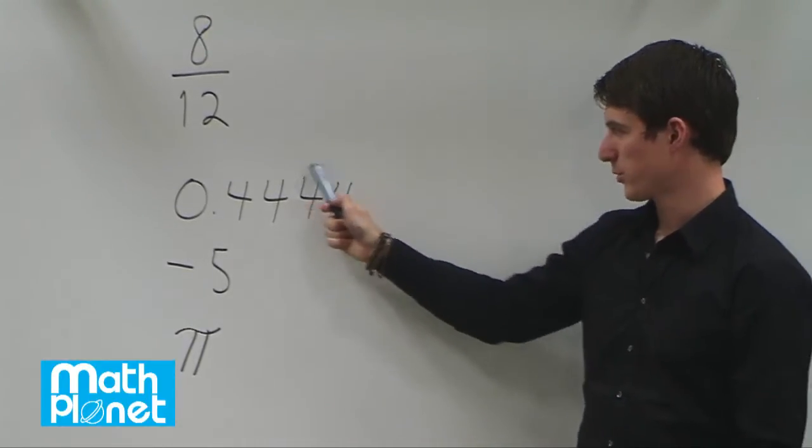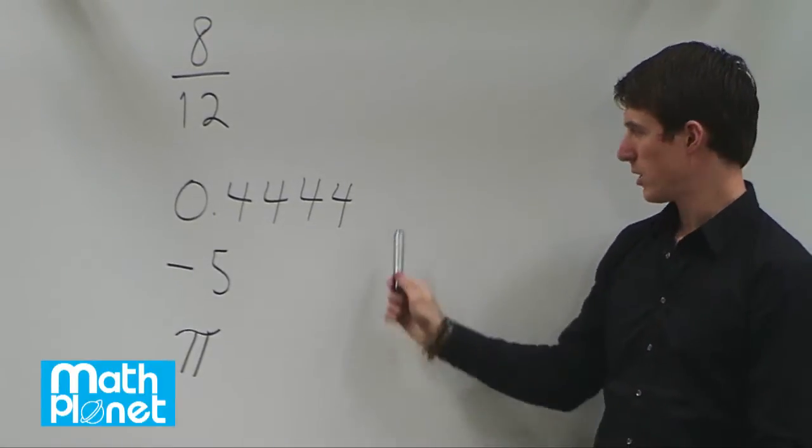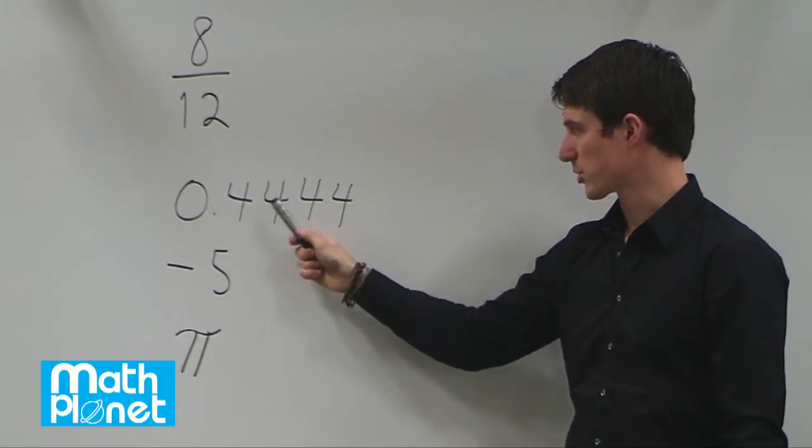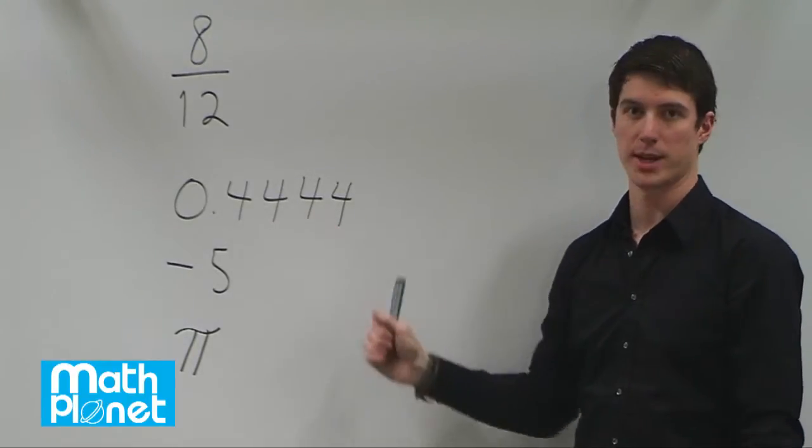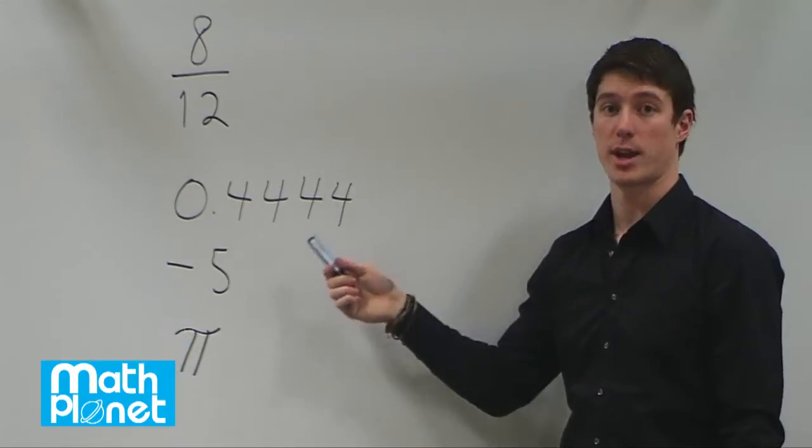Now the question about this one is, can we rewrite this as a simple fraction? Well this is a common number, it's actually 4 ninths. If we say 4 divided by 9, we get 0.4 repeating. So if this went on forever, it would be 4 ninths.